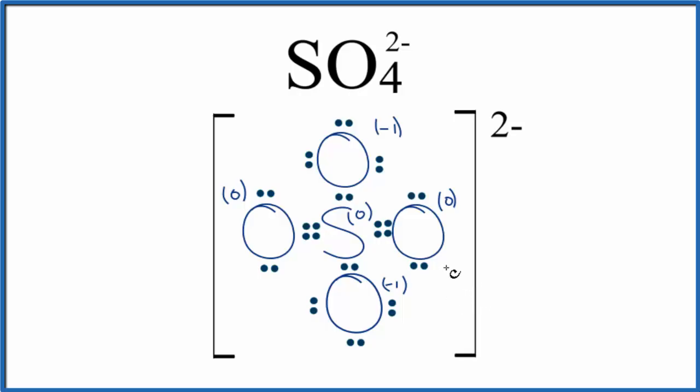We used formal charges to make sure we had the most likely or favorable structure. And then we looked at resonance to see what those bonds actually would look like in real life. And then figured out the molecular geometry and bond angles for SO4 2-. This is Dr. B. And thanks for watching.